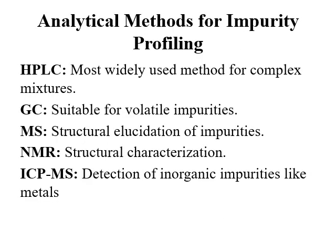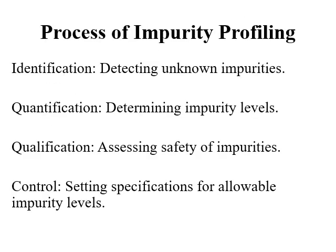The main analytical methods used are HPLC, GC, MS, NMR, and ICP-MS. HPLC is the most widely used method for complex mixtures. GC is suitable for volatile impurities like residual solvents. Mass spectrometry is used for structural elucidation of impurities. NMR is used for structural characterization, and ICP-MS is used for detection of inorganic impurities like metallic impurities.